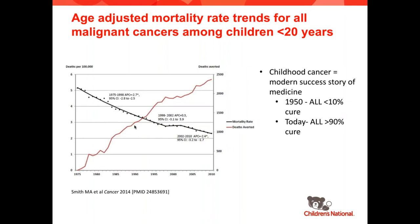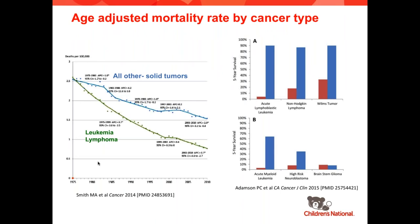The good news is that the mortality rate for pediatric cancers has significantly decreased over the past 40 years. Childhood cancer is a modern success story of medicine. For acute lymphoblastic leukemia, the most common pediatric cancer, less than 10% of patients were cured in 1950, whereas today over 90% are cured. Similar advances have been seen in Wilms tumors and lymphomas. However, this success has not been equally shared across all cancer types — the leukemia and lymphoma mortality improvements vastly outpace those of solid tumors.